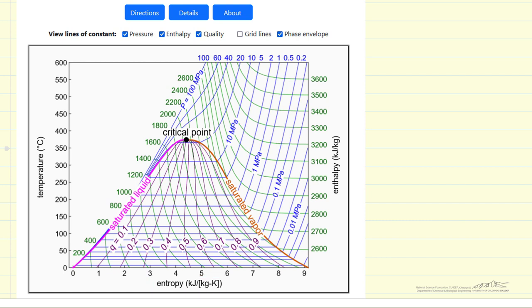The simulation gives you the option of which lines of constant value you display. When we're displaying all of them, as shown here, the simulation looks very complicated and makes it harder to understand. So we're going to look at the simulation and check and uncheck these boxes to show more clearly, for example, what constant pressure lines look like.